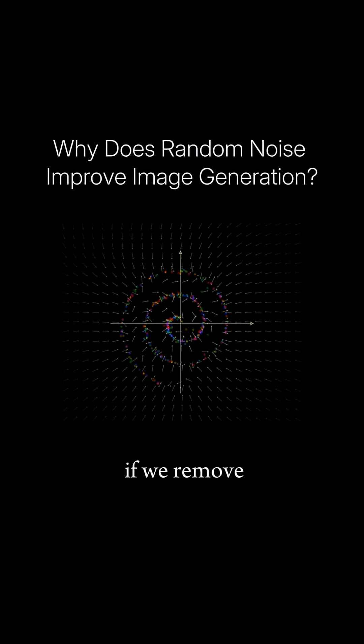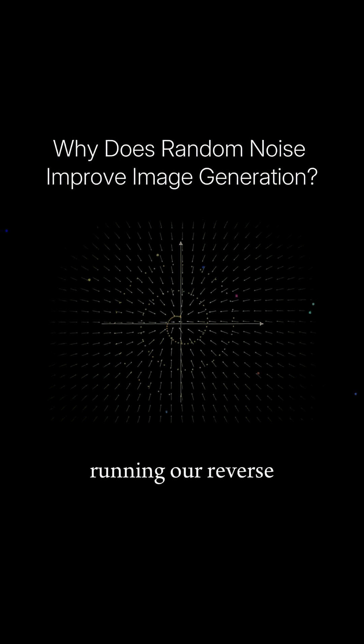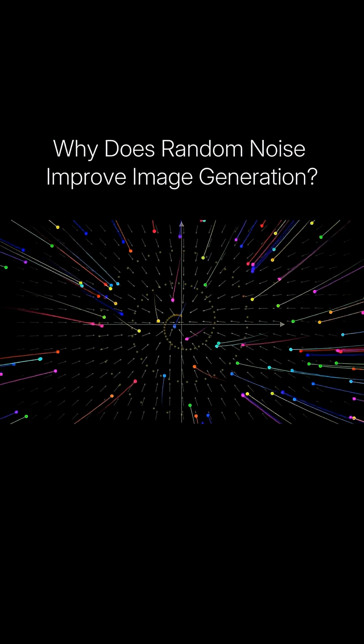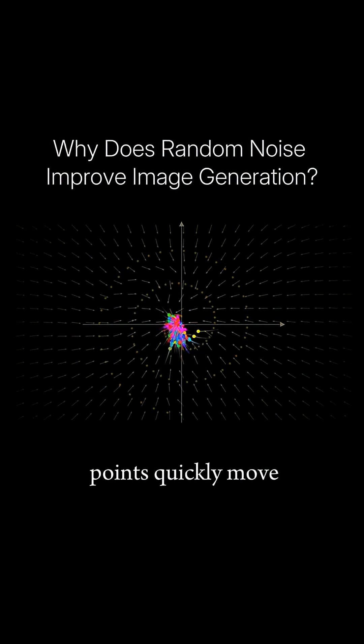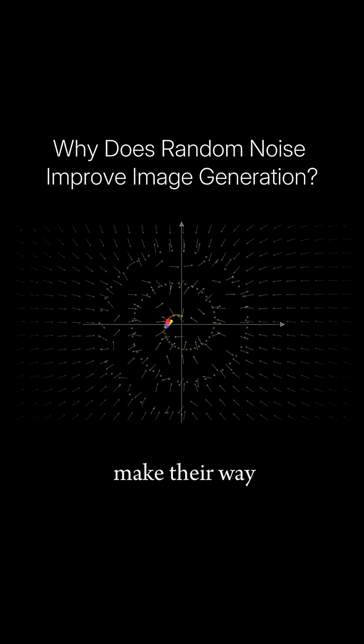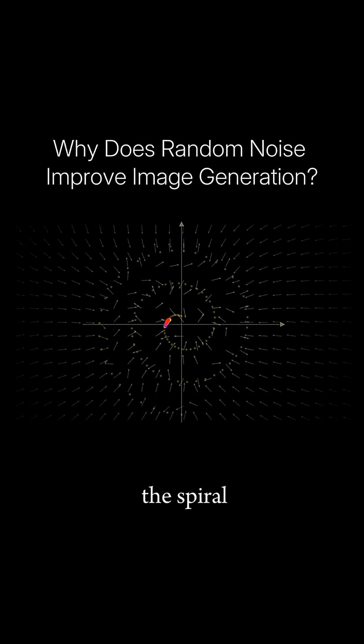Now what happens if we remove the noise addition steps? Running our reverse diffusion process again without the random noise step, all of our points quickly move to the center of our spiral and then make their way towards a single inside edge of the spiral.